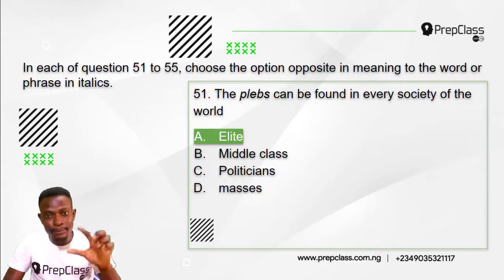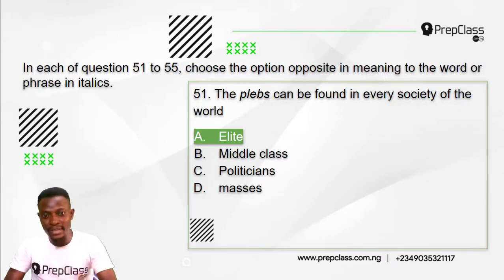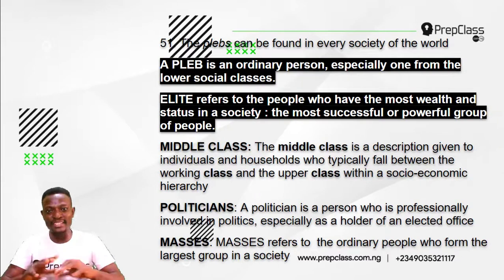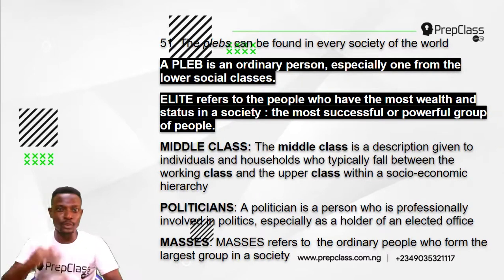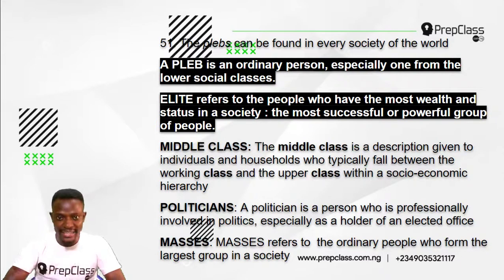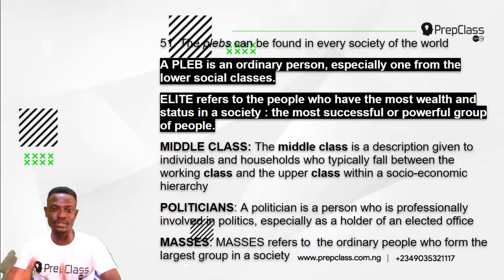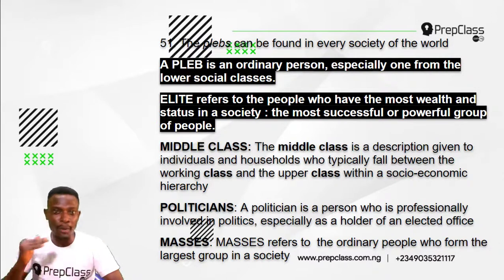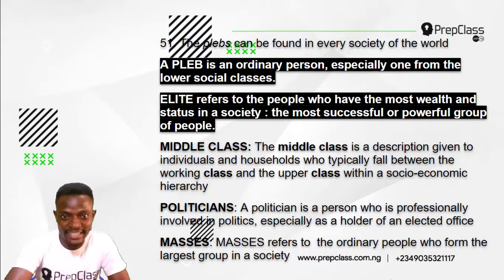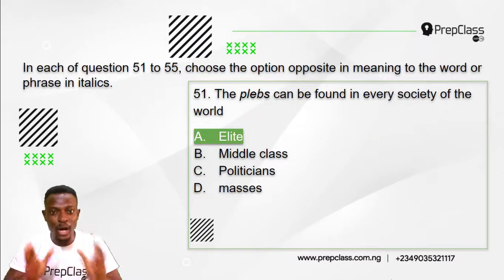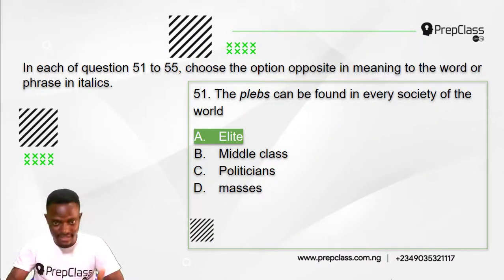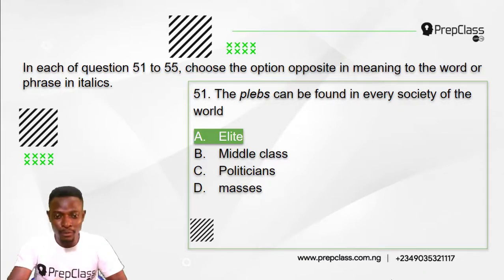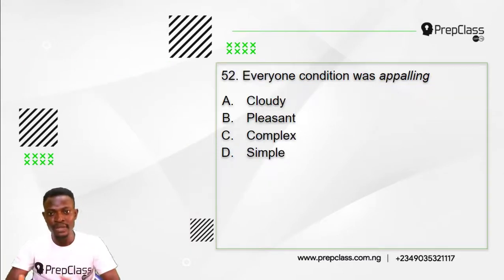So the answer to question 51 is option A: elite. The plebs can be found in all societies of the world. The opposite meaning to 'pleb' is 'elite' — the pleb is an ordinary person especially from the lower social classes, while the elite are the most successful or powerful group of people.